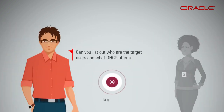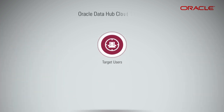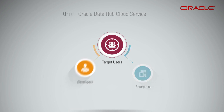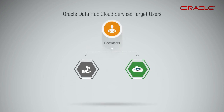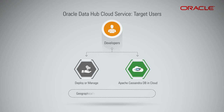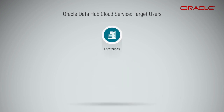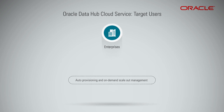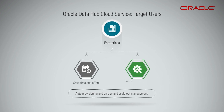Can you list out who are the target users and what DHCS offers? Target users are mainly divided into developers and enterprises. Data Hub Cloud Services allows developers to quickly deploy or manage Apache Cassandra database in the cloud, for those looking for geographically distributed, always-on data management. Data Hub offers auto-provisioning and on-demand scale-out management for enterprises looking to lower TCO.